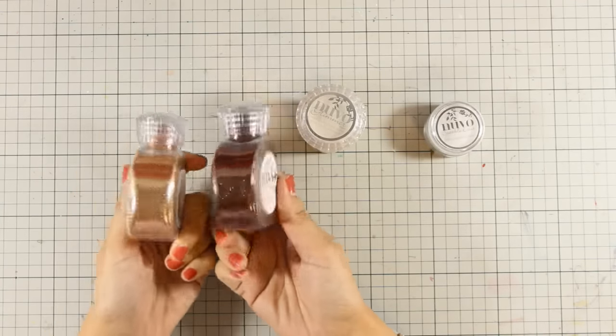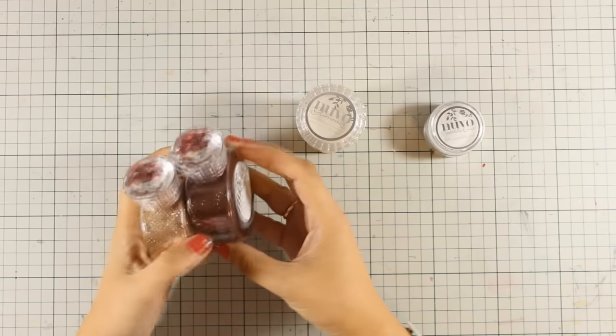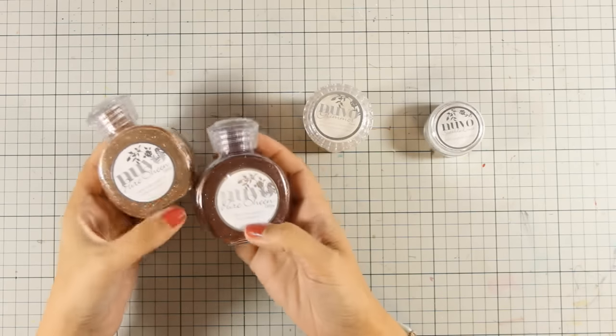These are the Nouveau glitter jars. They come in 24 different colors, they are all really gorgeous, and they contain the regular glitter that is quite chunky.